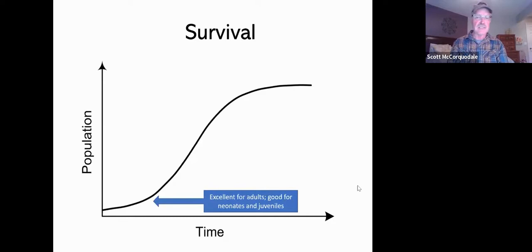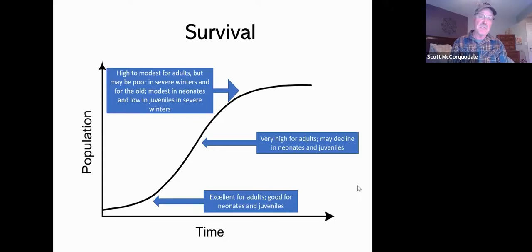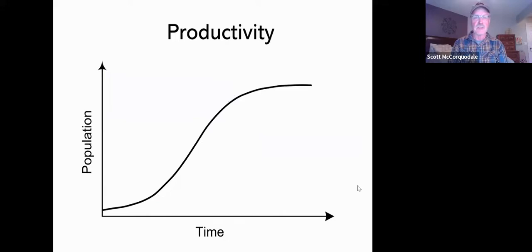Survival—individual animal survival: during colonization, it's excellent for adults and can be really still pretty good for neonates and juveniles. As density increases, it'll still be very high for adults for a time; it may start to decline in neonates and juveniles but really not until you start getting into that inflection point. Up here, survival can still be high but may also be modest for adults depending on how strong the density dependence is, but may be poor in severe winters and for older animals because they tend to be in poorer shape. It's typically modest in neonates and pretty low in juveniles during severe winters.